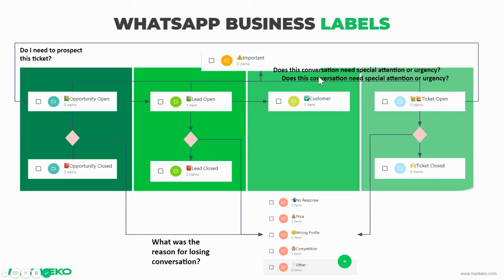The other important thing is: does this conversation need special attention or urgency? I can send the person to the tag of 'important.' So if they're an opportunity open, a lead open, or a ticket open, I can tag them as important as well. There are also some tickets where users ask specific questions that I might be able to convert into a prospect — so I can change the ticket to a new opportunity and start the process again.